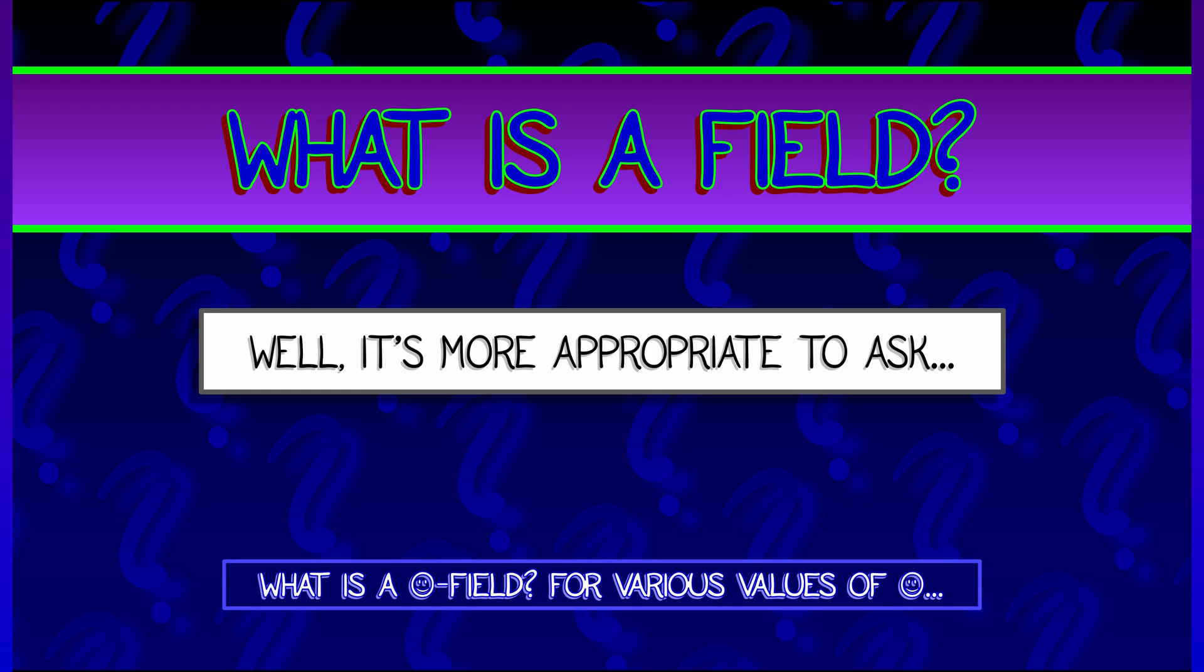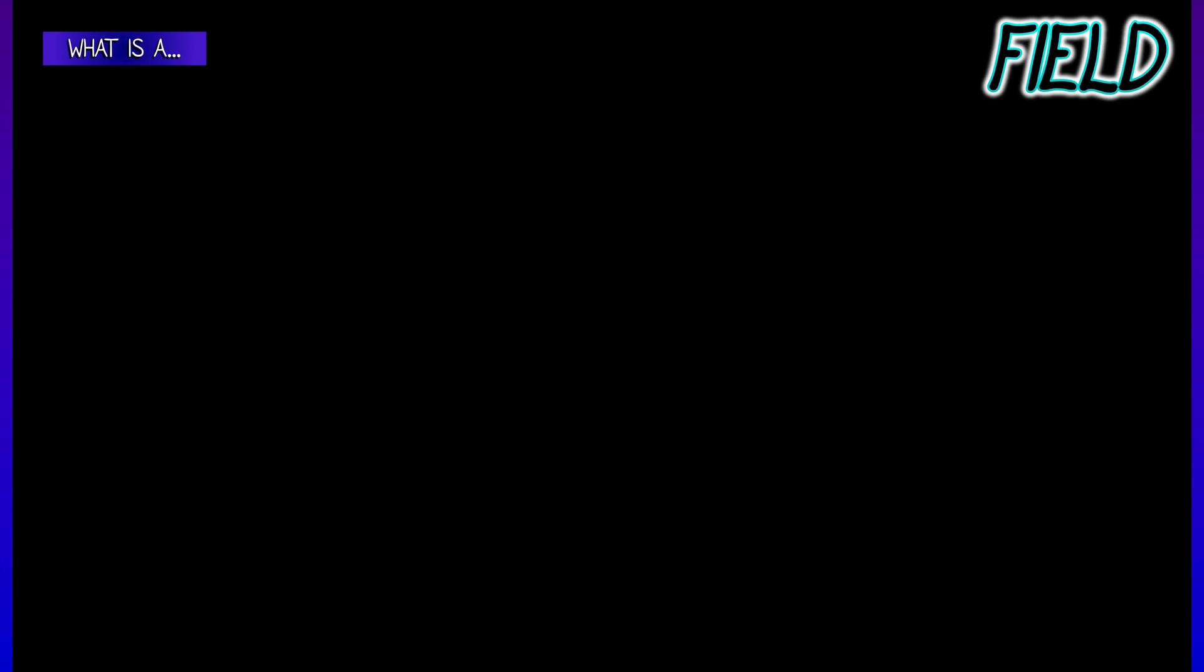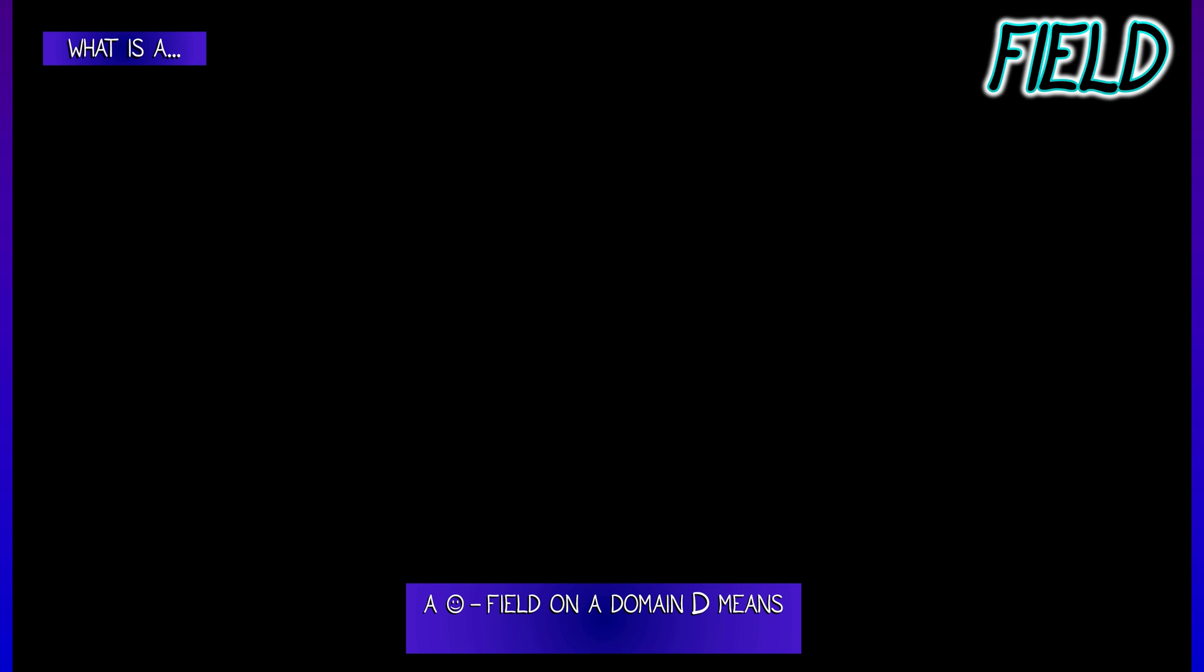Now what is that? What do I mean by that? A smiley field on a domain D means that at every point in that domain, you have a smiley.